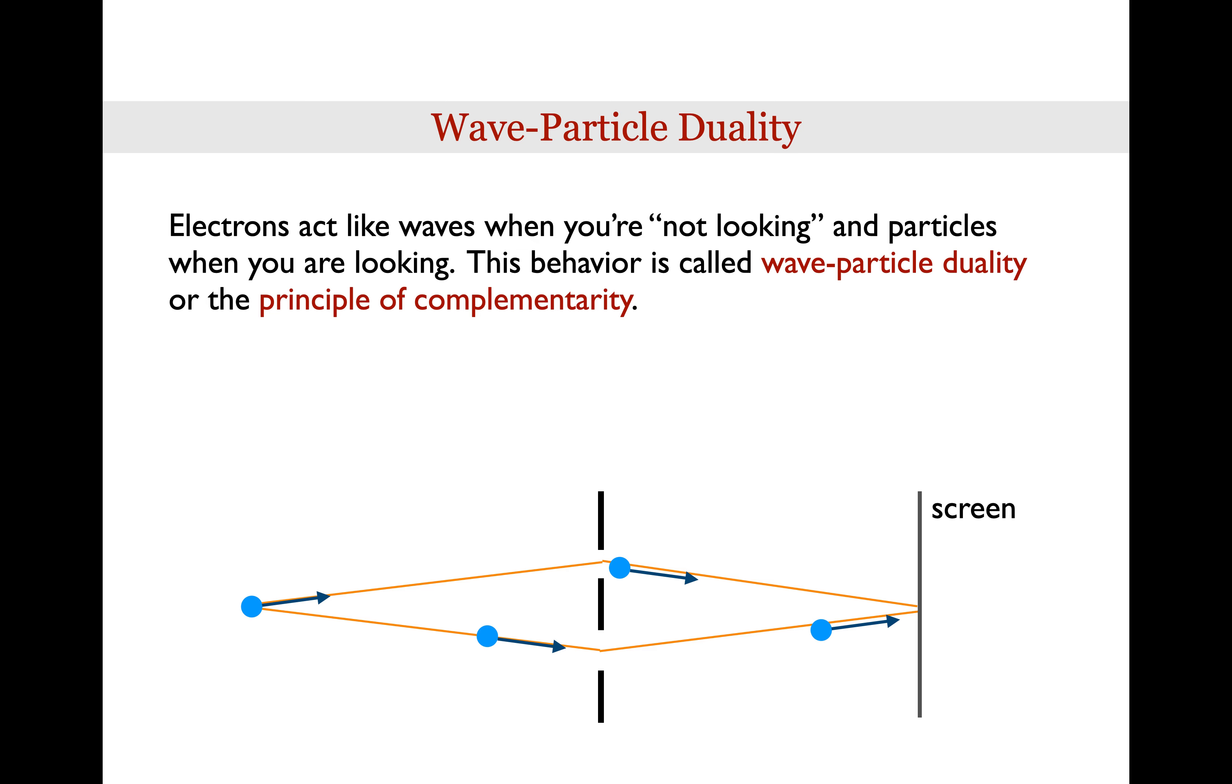This is sometimes called wave-particle duality, or the principle of complementarity. Electrons act like waves when you're quote-unquote not looking. And they act like particles when you are looking. So they act like waves when they're passing through the slits and you're not watching them. But then they act like particles when you do watch them on the screen.